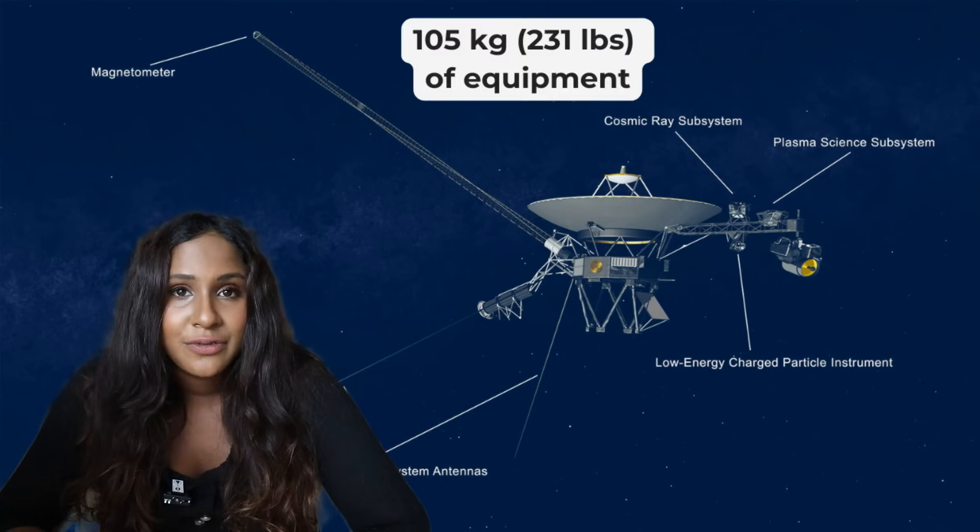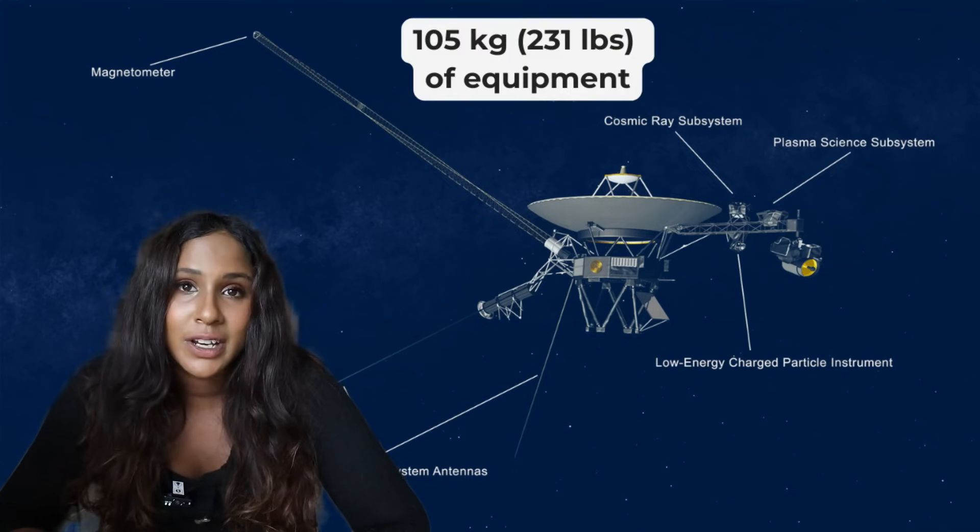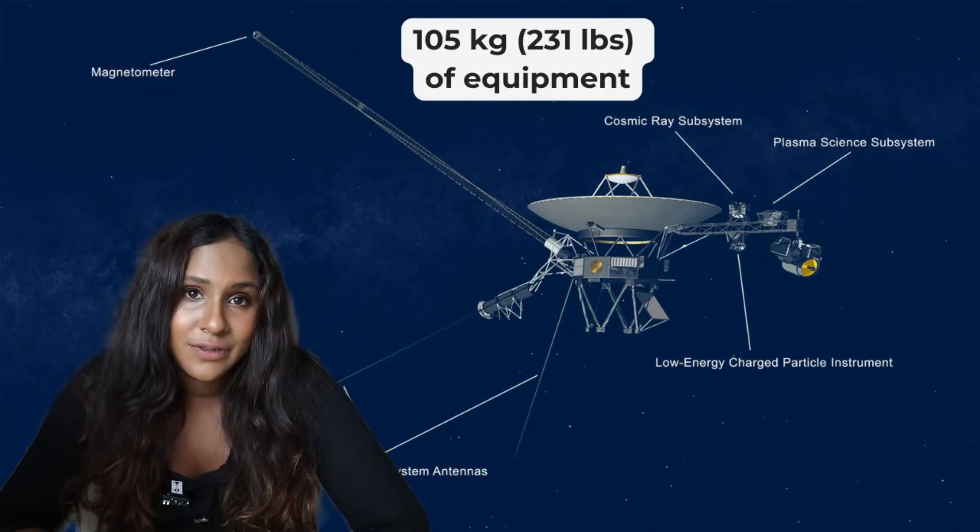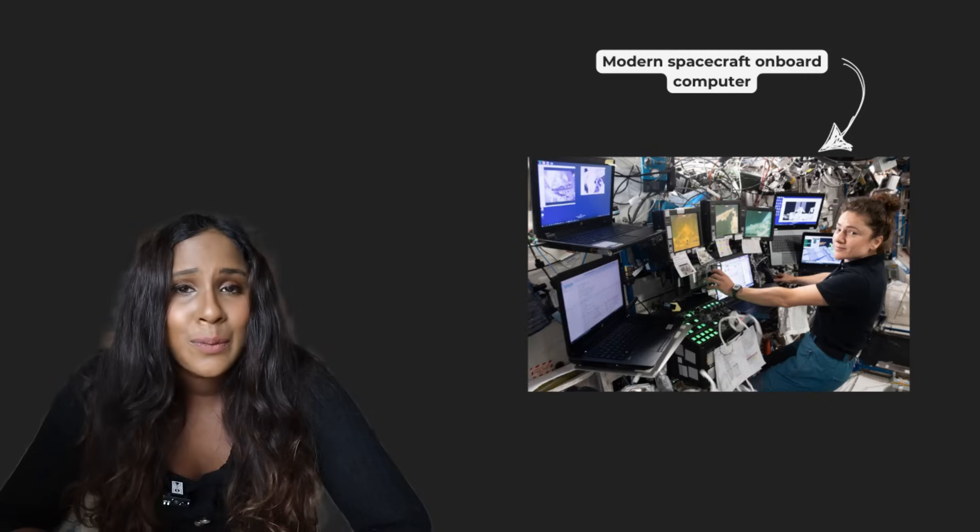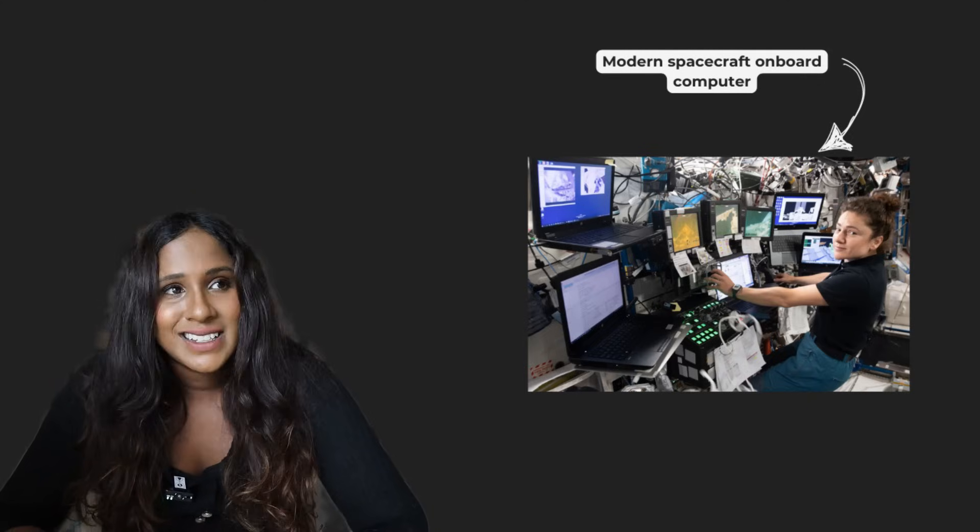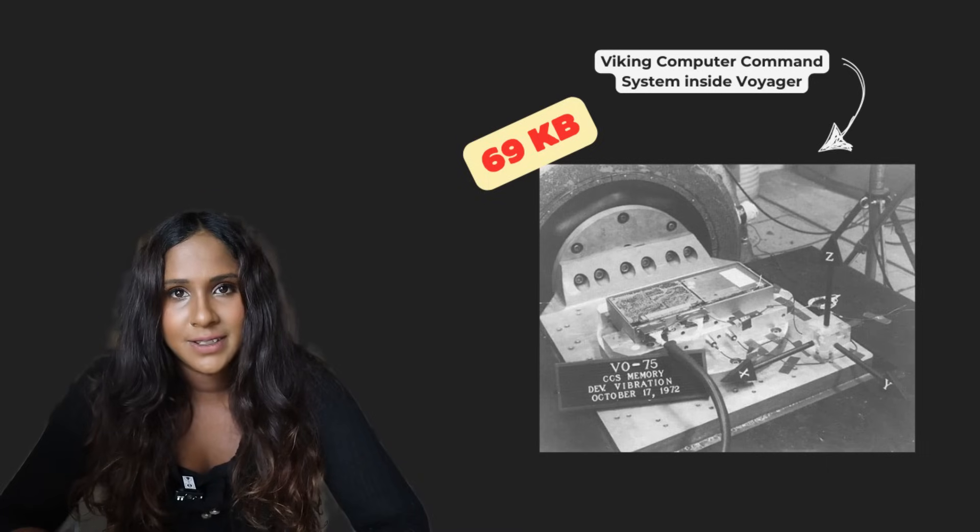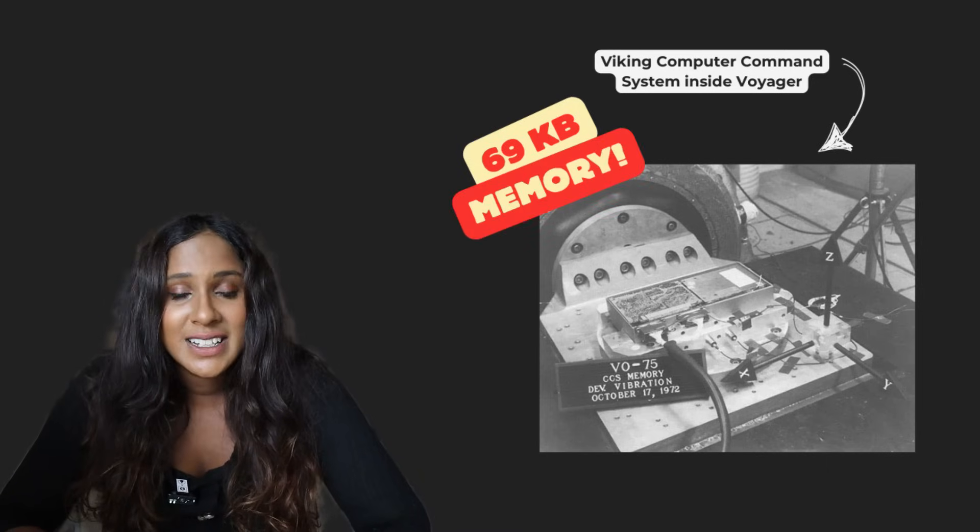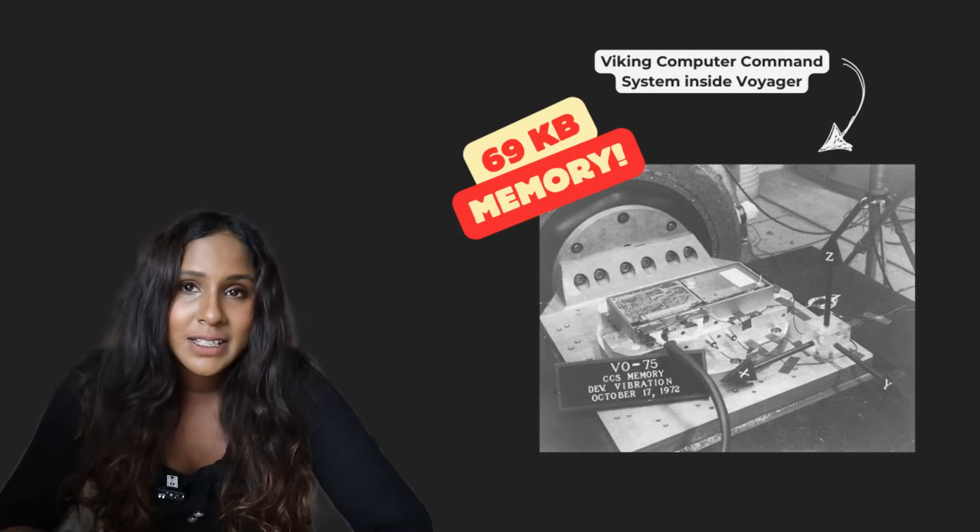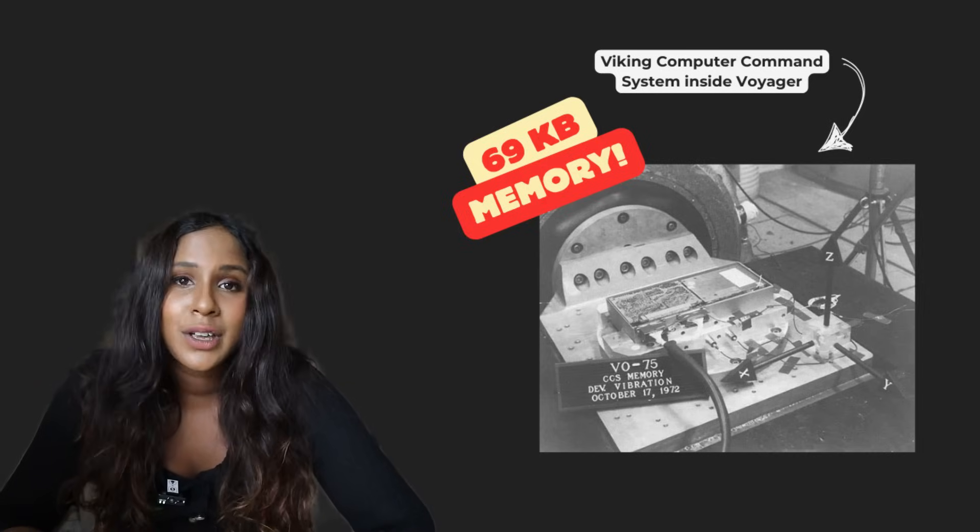I would say Voyager 1 is almost like a flying science lab. The spacecraft carries 105 kilograms or 231 pounds of scientific instrumentation. And unlike modern spacecraft, it doesn't have the fancy touchscreen interface or AI-powered autopilots. It actually runs on about 69 kilobytes of memory, less computing power than a simple calculator today.